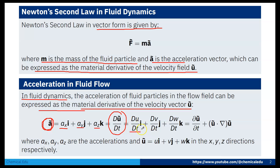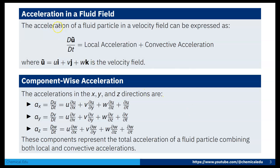In vectorial form, the material derivative is ∂u/∂t + (u·∇)u. So the acceleration term can be expressed in vectorial form. The acceleration of the fluid particle has two parts: one is local acceleration and another is convective acceleration.